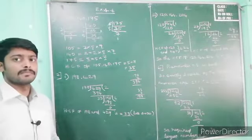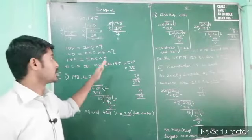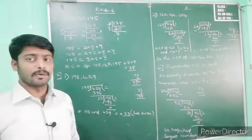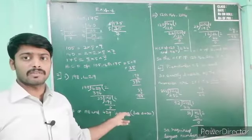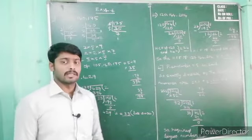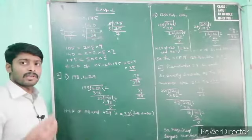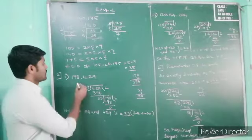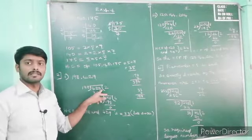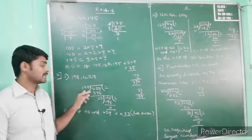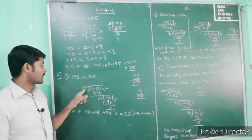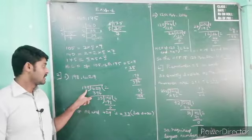Next one is division method. In the division method, we do not need to find out the prime factorization — directly by division we can find out the HCF. But here, only two numbers we can do at a time. First, take the bigger number in the dividend place, and the smaller number in the divisor place. Here 429 is bigger, so I have written it inside; 198 is the divisor because it is the smaller number.